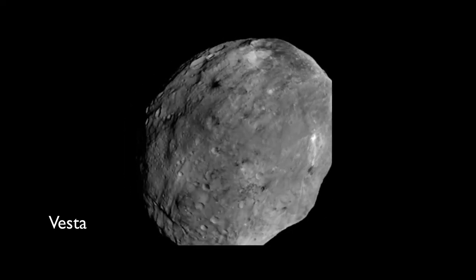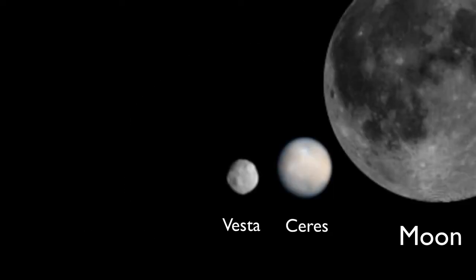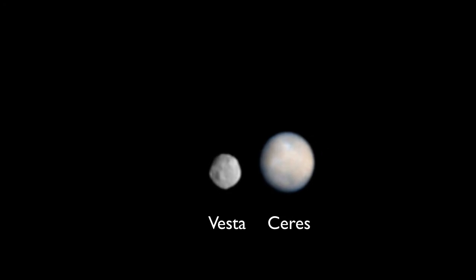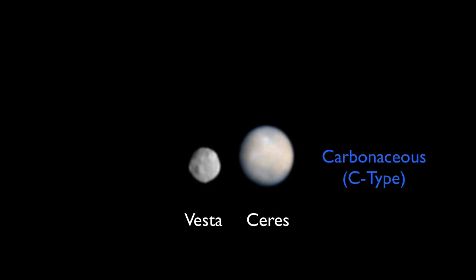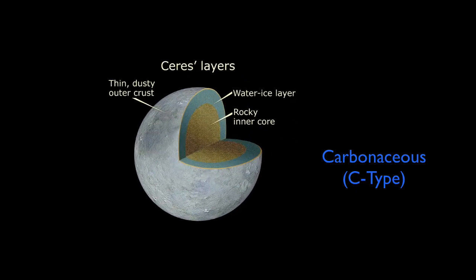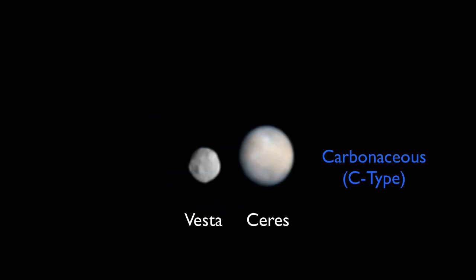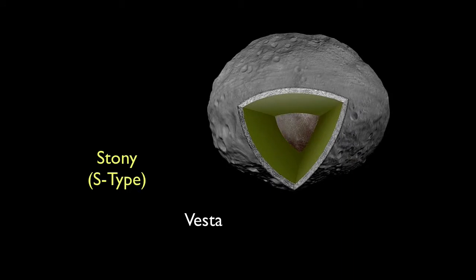The Dawn space probe was scheduled to visit both of these asteroids not only because they're among the largest, but also because they're so significantly different. Ceres is of the carbonaceous type, which means it contains a fair amount of carbon. It also has minerals commonly used in fertilizer and likely a subterranean frozen ocean of water — maybe the perfect place to set up a greenhouse. Vesta is the stony type, which means it's basically a big rock of silicates and other minerals, but also high in metal content — valuable metals such as nickel, cobalt, even gold and platinum.